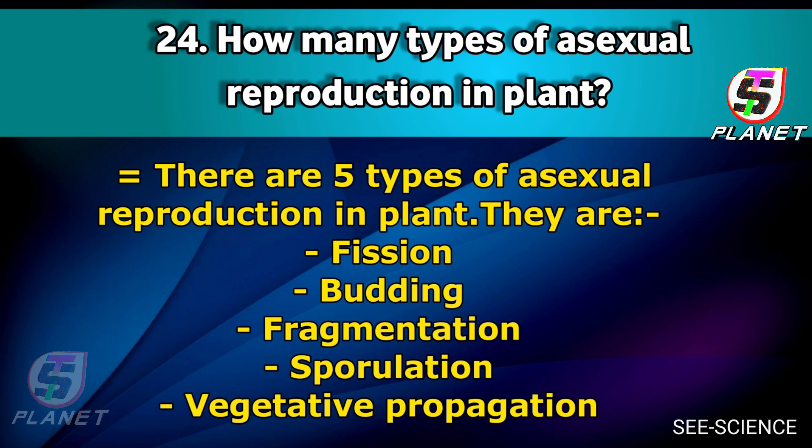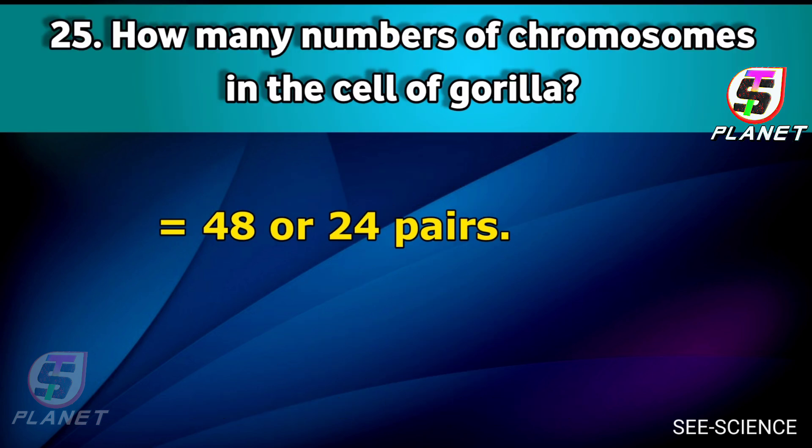Here are five modes of reproduction in plants: fission, budding, fragmentation, sporulation, and vegetative propagation.